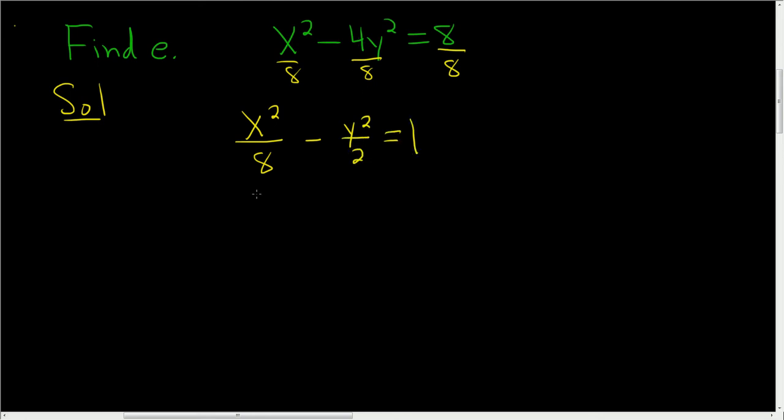And then here you get 1. So for a hyperbola, a squared is always just the number that's here, so 8. And b squared is always just the number that's here, so 2.